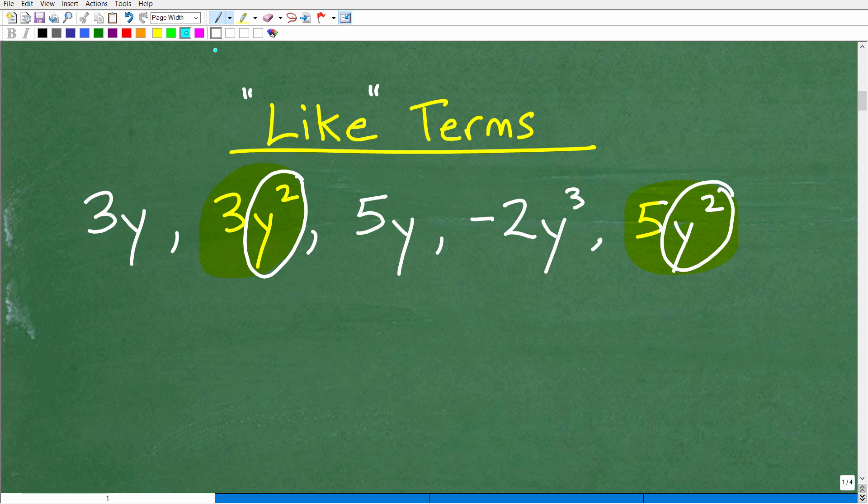So for example, 3y squared and 5y would not be like terms. You might be saying, well, they both have a y. OK, well, no, that's not good enough. They must have a y squared. So you must have the exact same variable. It can't be y and this can't be x. It must be y. It must be to the same power.